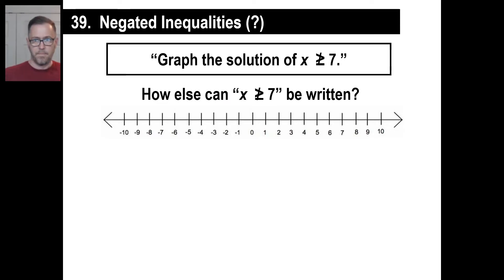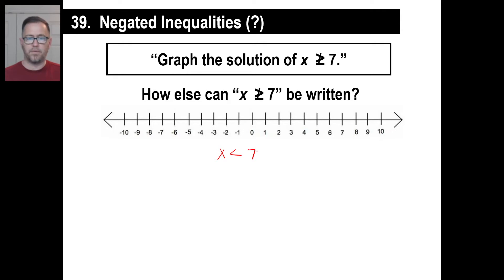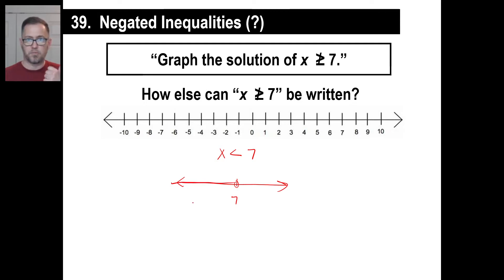So look at this box. Graph the solution of X is not greater than or equal to 7. Well, if it's not greater than or equal to 7, then that must mean that it's less than 7, right? When you're doing these problems, don't make a long complicated graph. Just go like this — X is less than 7. There's my 7. Open circle because it doesn't include 7. There you go. Go to the next problem. Boom.